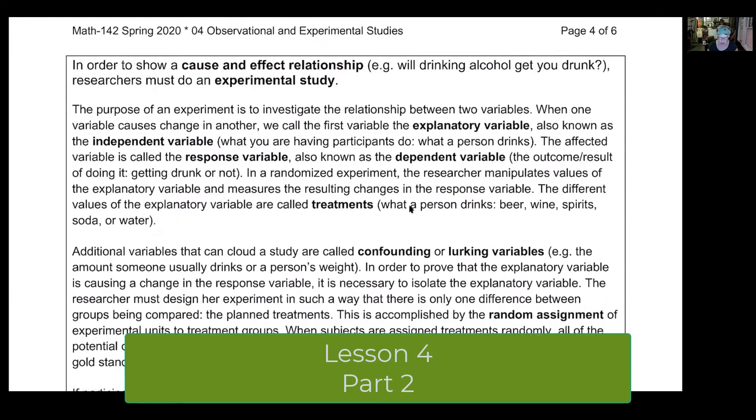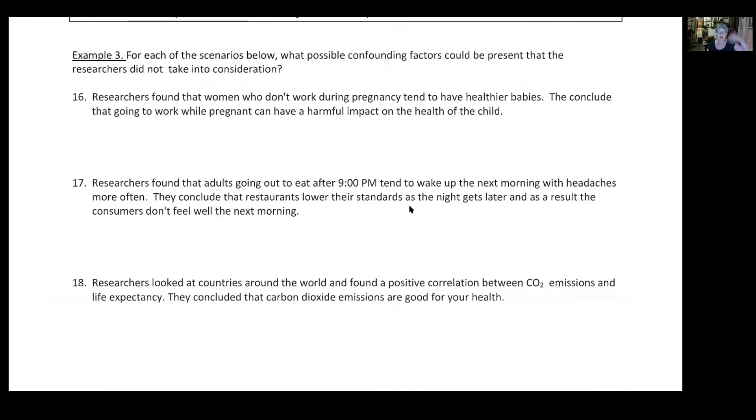Let's talk about experiments. Up until now we were talking about observational studies. Observational studies - we can generalize to the wider population if the participants were gathered randomly, and that randomness takes care of a lot of the confounding variables.